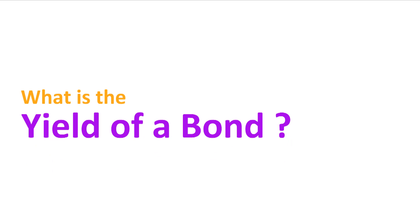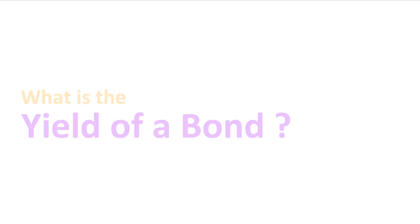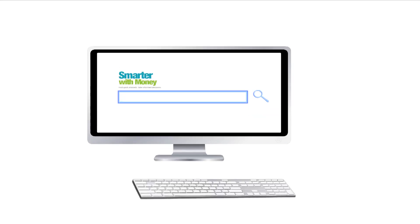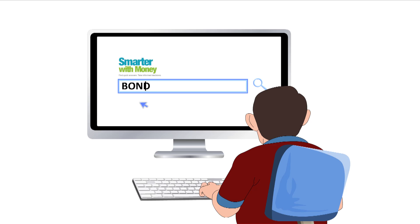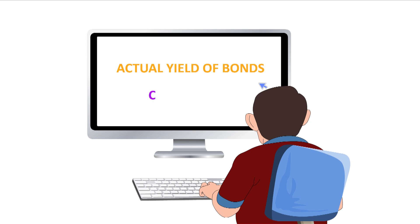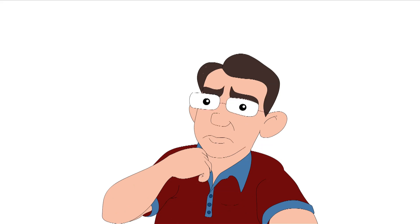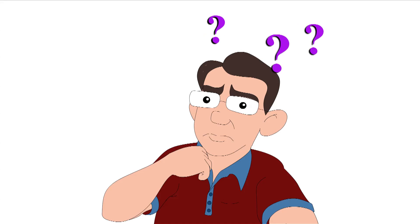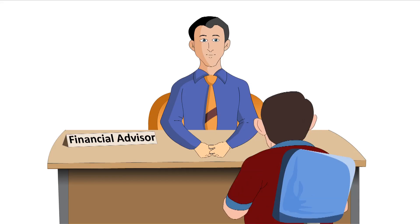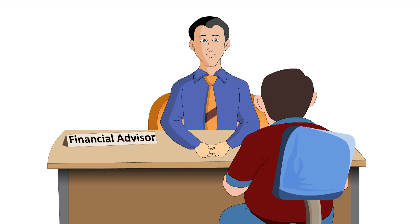What is the yield of a bond? While reading up on bonds, Mudra has come to know that the actual yield of a bond may be different from the coupon rate it offers. He wonders how that could be so, and decides to visit a financial advisor to investigate the matter.